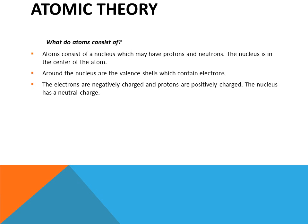What do atoms consist of? An atom consists of a nucleus which may have a proton and a neutron. The nucleus is in the center of the atom. Around the nucleus are the valence shells which contain the electrons. The electrons flow around the nucleus and travel at very high speeds. Electrons are negatively charged and protons are positively charged. The nucleus has a neutral charge.